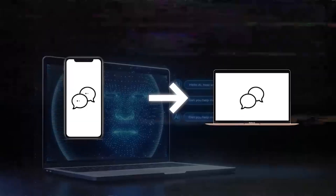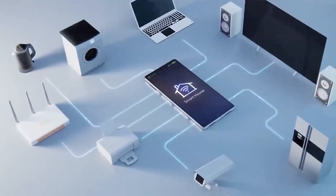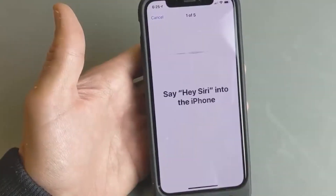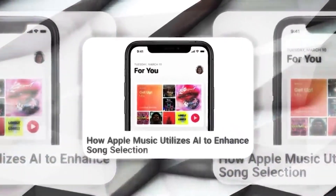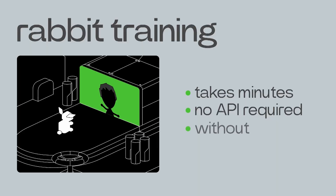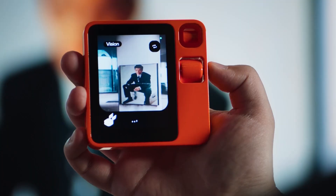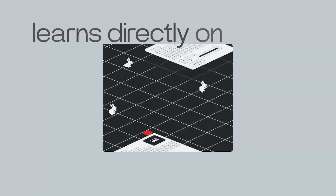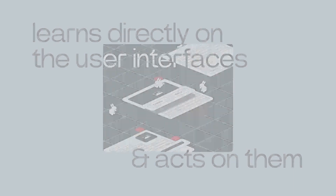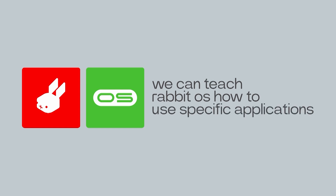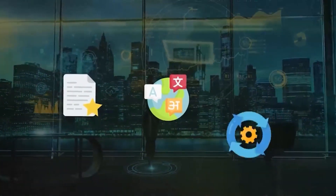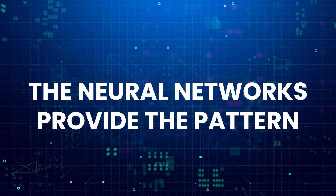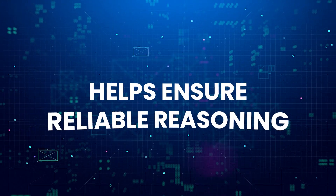LAM uses a technique called learning by demonstration, or imitation learning. A human first performs some task on an app interface, like booking a flight or ordering food. LAM observes all the steps and interfaces involved and builds a conceptual model of how that app works and what steps are needed to complete the task. Later, even if the interface looks a bit different, LAM can replicate the same process by mapping what it learned to the new interface. The more humans show LAM, the more capable it becomes at understanding and operating all kinds of apps and sites. LAM combines neural networks and symbolic logic programming to generalize its knowledge to new interfaces and contexts. The neural networks provide pattern recognition capability while logic helps ensure reliable reasoning.